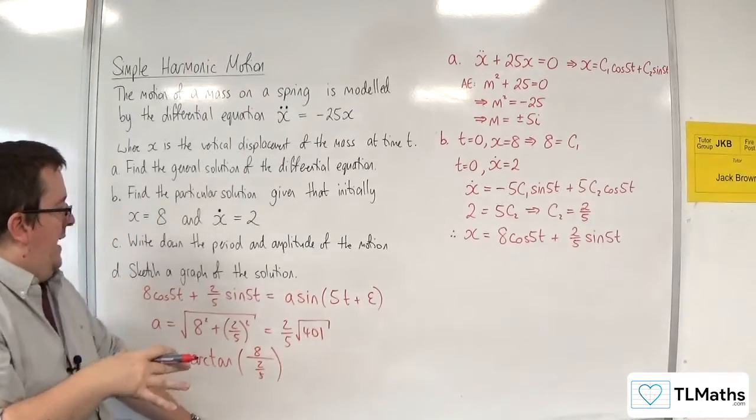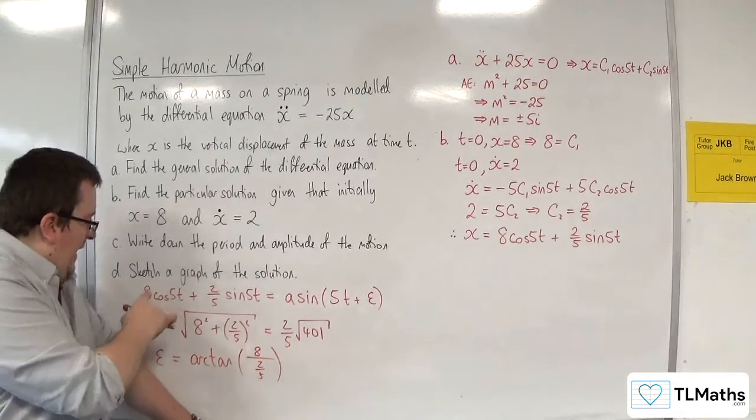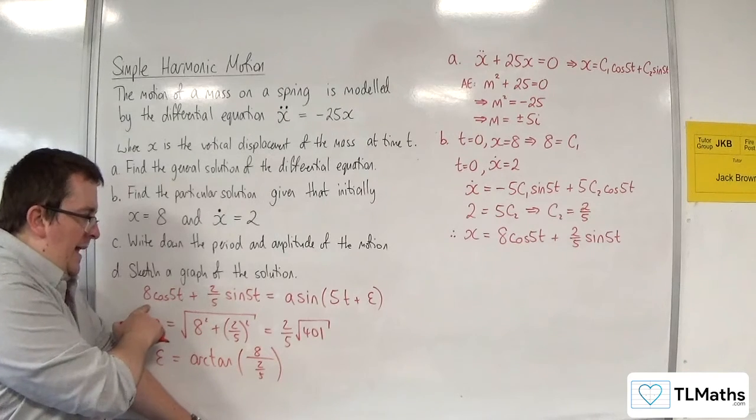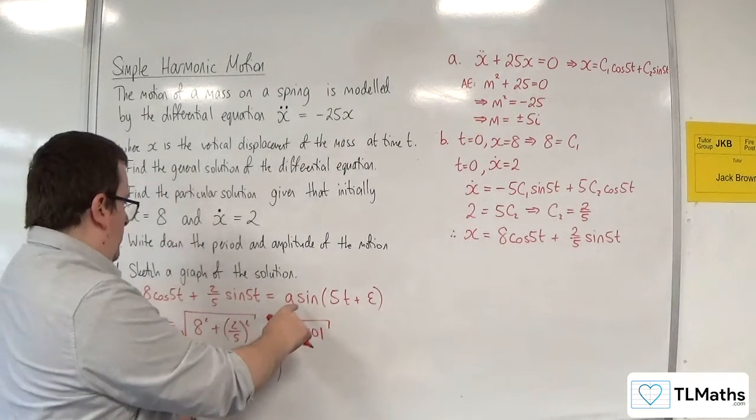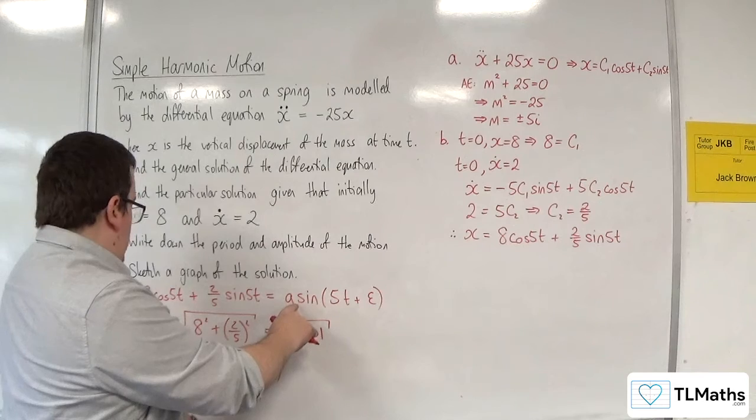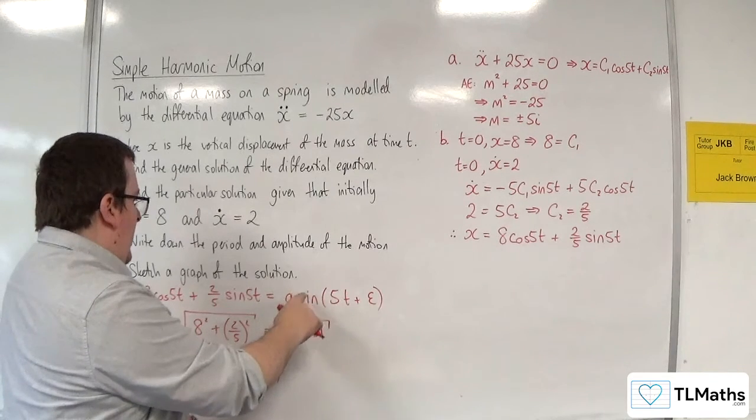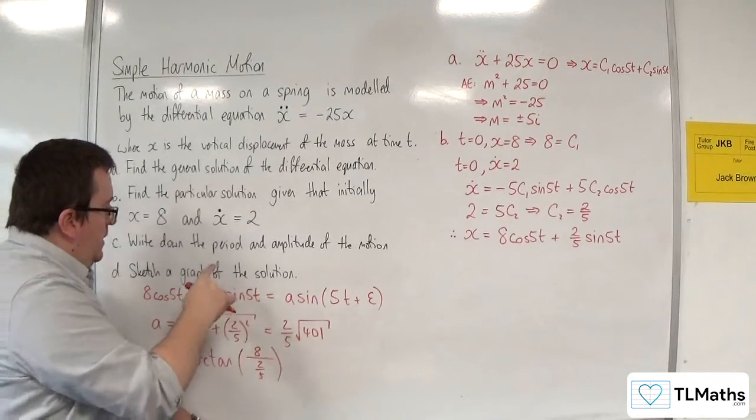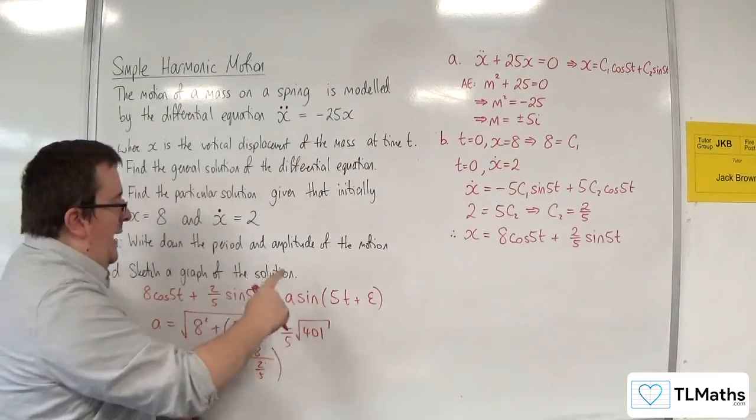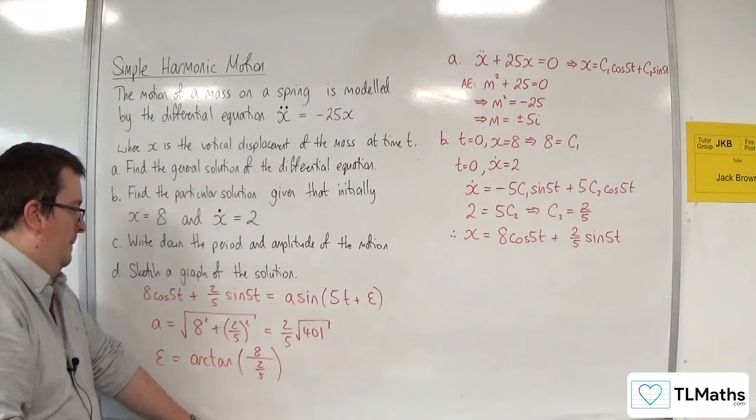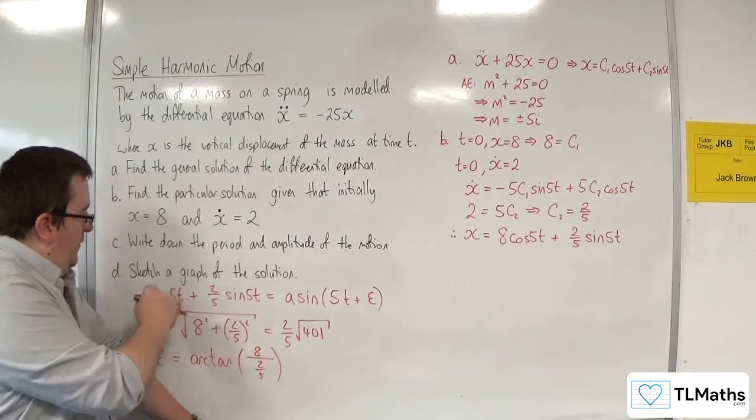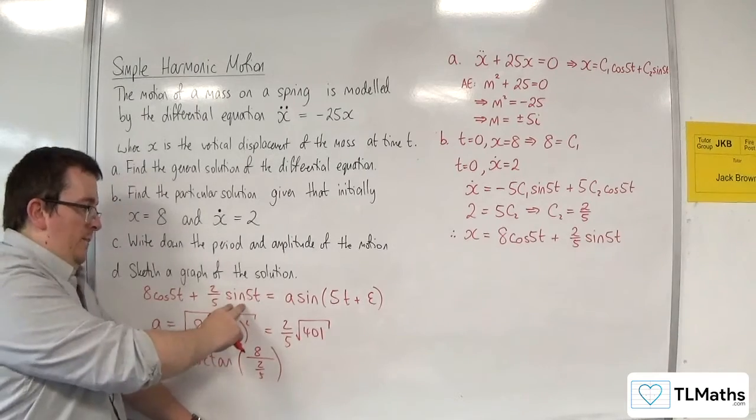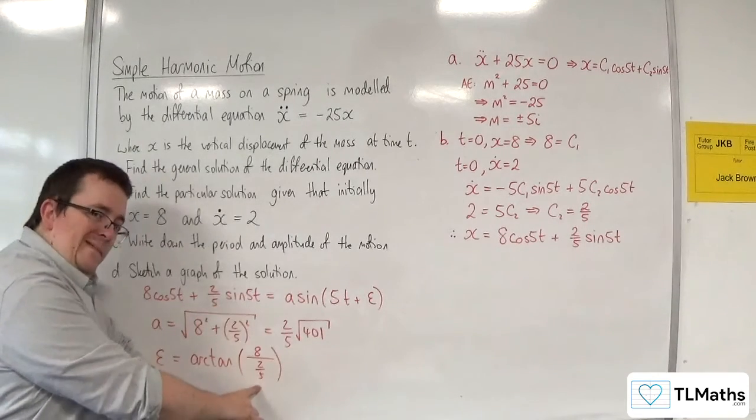Because what you should get from that is that the 8 is a times the a sine of ε, and the 2/5 will be a cosine of ε. So you need the sine one divided by the cosine one to get the tan one. So the 8 divided by the 2/5. So you can try and do the stages in your head if you like.